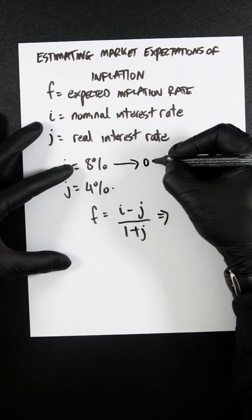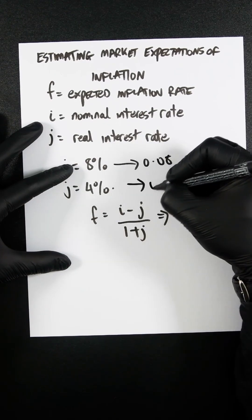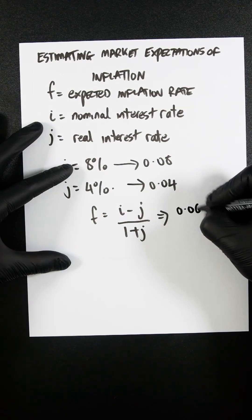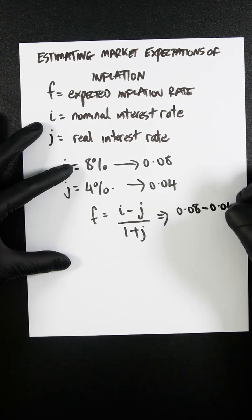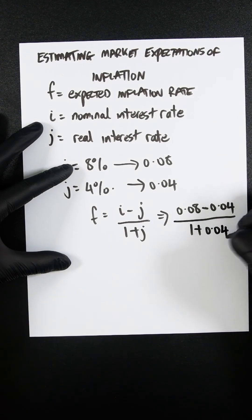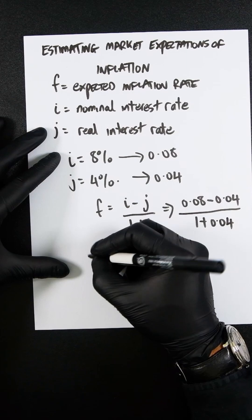converting this into a decimal is 0.08, converting this is 0.04. You're going to get 0.08 minus 0.04 over 1 plus 0.04. If we now simplify this